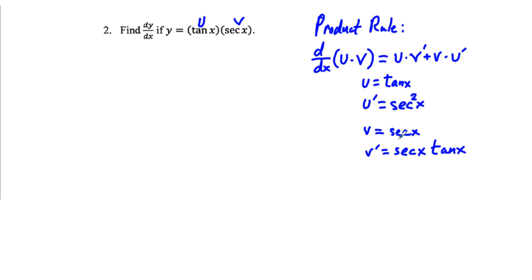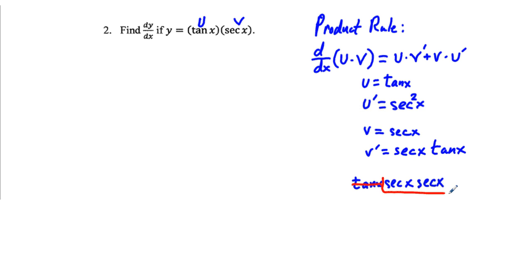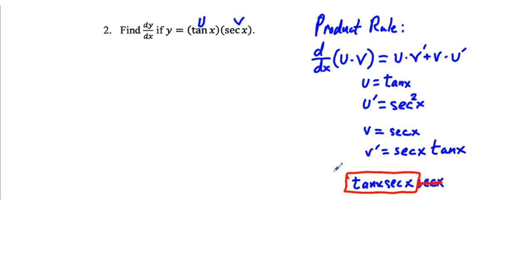To help remember the derivatives of tangent and secant, we write these three factors in order: tan x, secant x, secant x. With this written down, we cross out whichever function we're differentiating. If we take the derivative of tangent x, we cross out tangent and are left with secant x times secant x, which is secant squared x. For secant x, we cross it out and are left with tangent x times secant x.